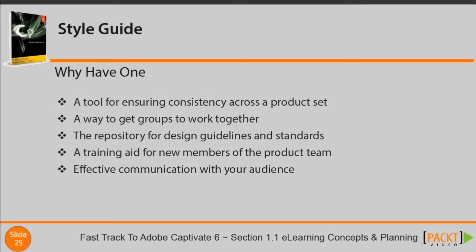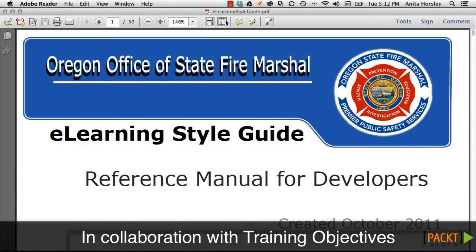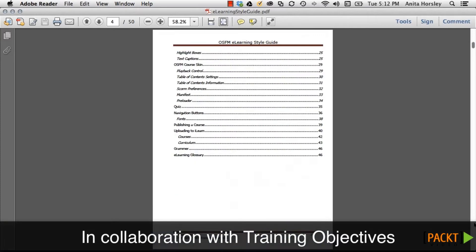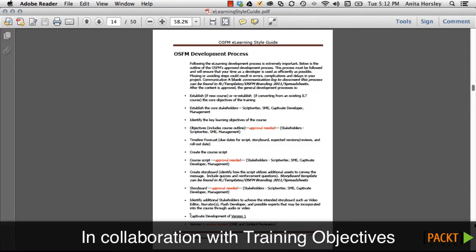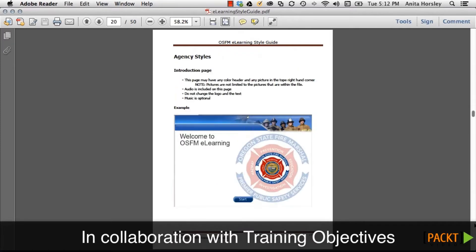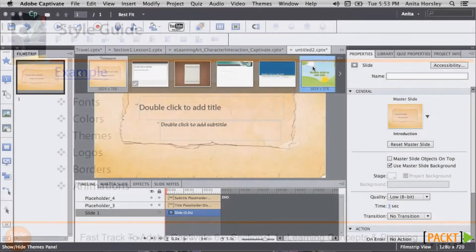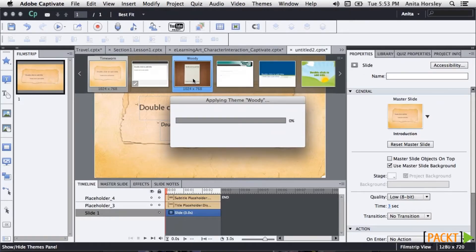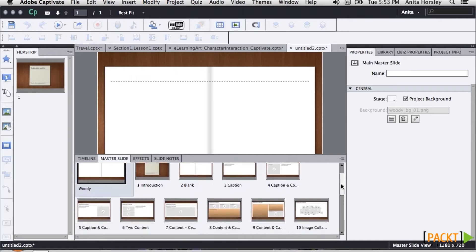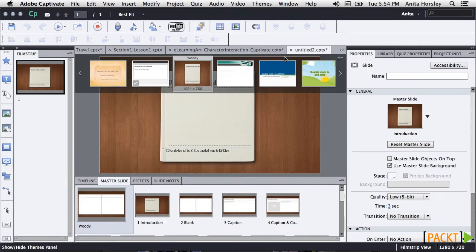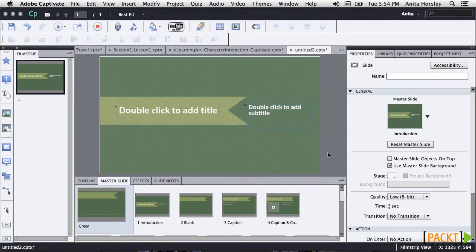Let's talk a little bit about creating a style guide. Creating and using a style guide will save you a lot of time during the development process. A style guide is a reference document that includes rules and suggestions for writing style and document presentation specific to the branding of your organization. It may include such things as font size, logos, colors, borders, themes, etc. Adobe Captivate 6 has wonderful new themes and it's easy to create and save customized styles. Having a style guide gives your courses a consistent and professional look and feel, and more importantly, it allows your audience to identify with your courses and focus on the content.